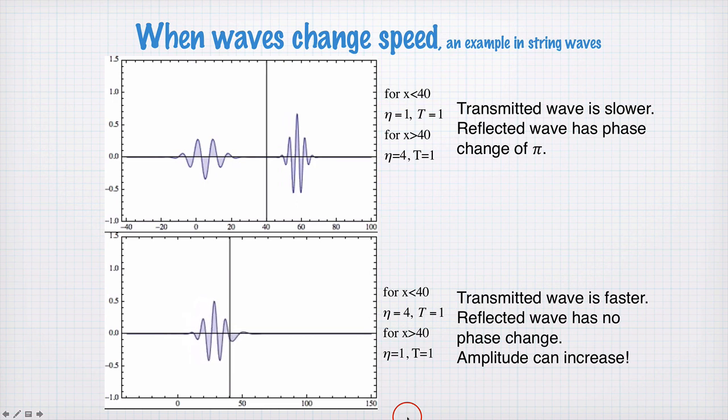Hits the interface. We see now on reflection there is no phase change, so the big peak is still pointing up. And on the other side, the big peak is also pointing up. So we have the transmitted wave being faster now because it's in a lower density medium, and there is no phase change.